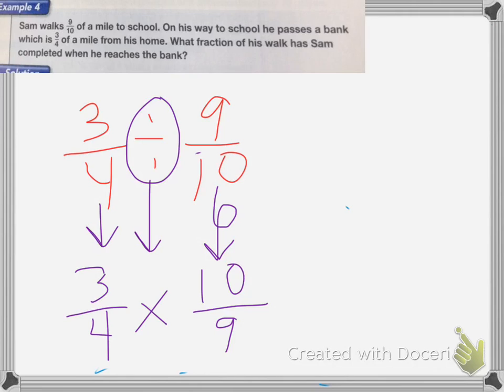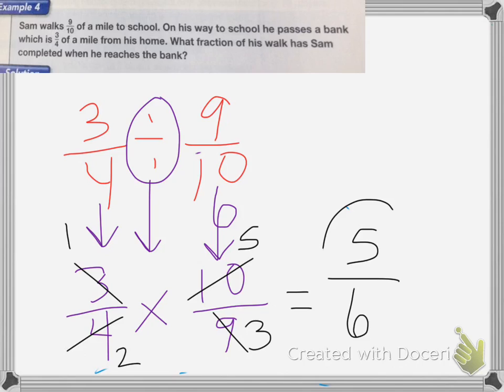Now I'm going to multiply these. I'm going to cancel first to make it easier. Three and nine. Three becomes a one. Nine becomes a three. Ten and four. Four becomes a two. Ten becomes a five. So one times five is five. Three times two is six. So my answer is he was five-sixths of the way.